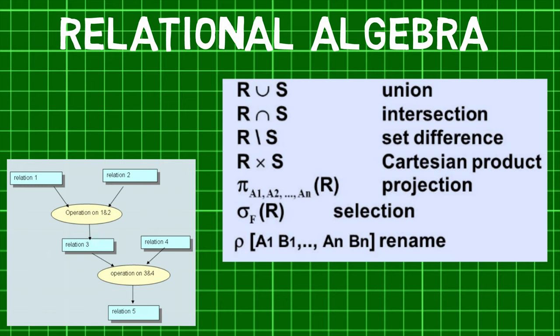Fifth comes the cartesian product operation which combines information of two different relations into one. Sixth and last is the rename operation and it allows us to rename the output relation.